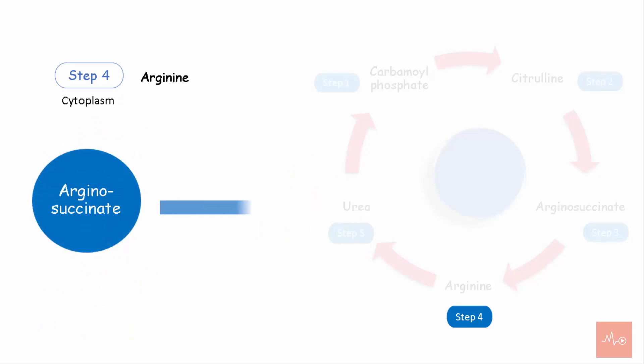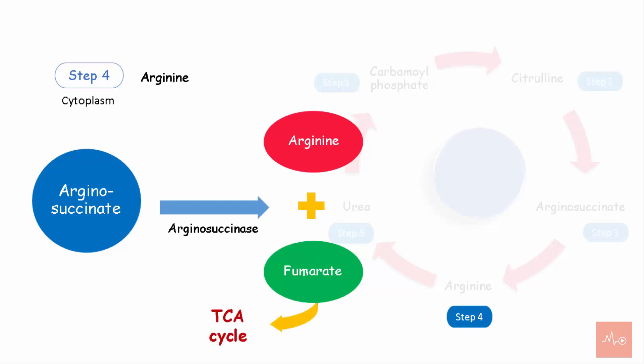Step 4 is the synthesis of arginine. Arginosuccinate is broken down to form arginine and fumarate by the enzyme arginosuccinate lyase, also called arginosuccinase. The fumarate that forms participates in the TCA cycle and thus acts as a connecting link between the urea cycle and the TCA cycle.